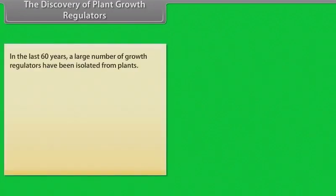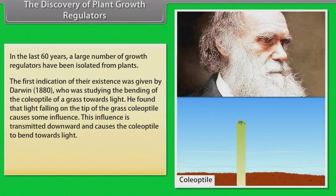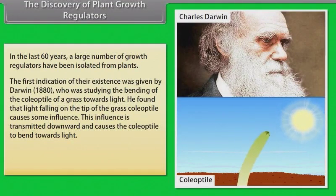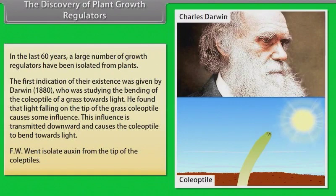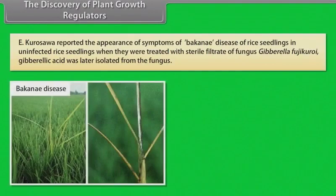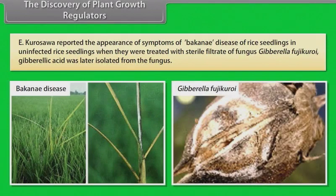The discovery of plant growth regulators: In the last 60 years, a large number of growth regulators have been isolated from plants. The first indication of their existence was given by Darwin (1880), who was studying the bending of the coleoptile of a grass towards light. He found that light falling on the tip of the grass coleoptile causes some influence that is transmitted downward, causing the coleoptile to bend towards light. F.W. Went isolated auxin from the tip of the coleoptiles. E. Kurosawa reported the appearance of symptoms of Bakanae disease of rice seedlings in uninfected rice seedlings when they were treated with sterile filtrate of the fungus Gibberella fujikuroi. Gibberellic acid was later isolated from the fungus.